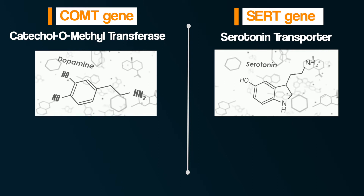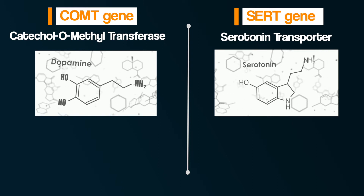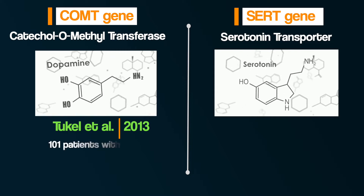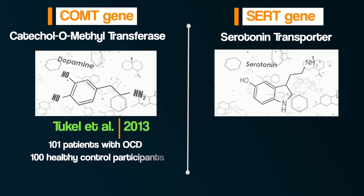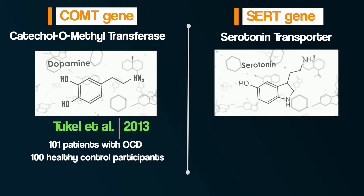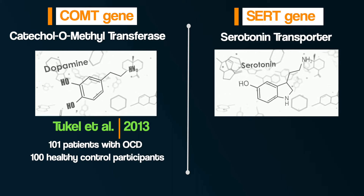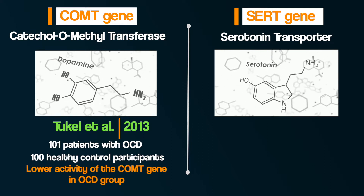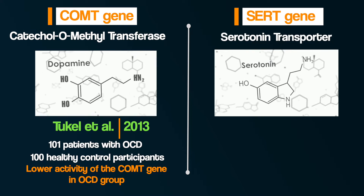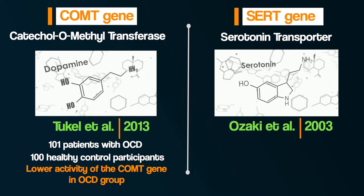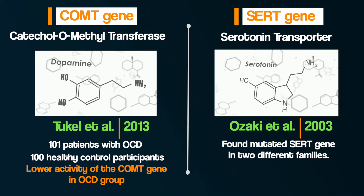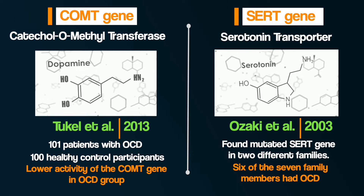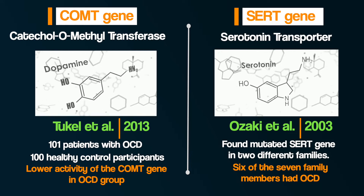For the COMT gene, research by Tukel et al. in 2013 compared 101 patients with OCD and 100 healthy control participants. They found that OCD patients had lower activity of the COMT gene than normal, and this was related to higher levels of dopamine. For the SERT gene, Ozaki et al. in 2003 found a mutation in the SERT gene in two different families. Six of the seven family members with the mutated SERT gene had OCD.